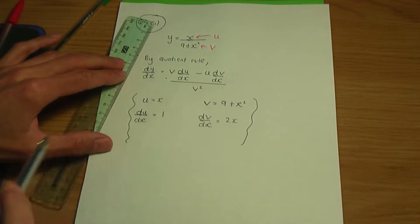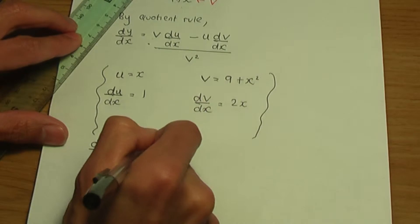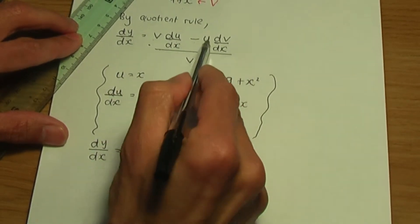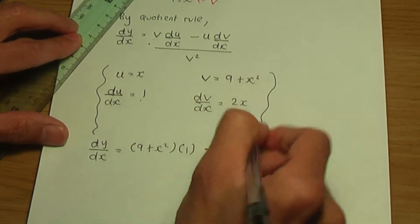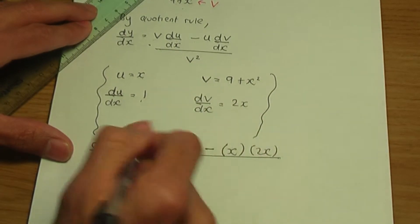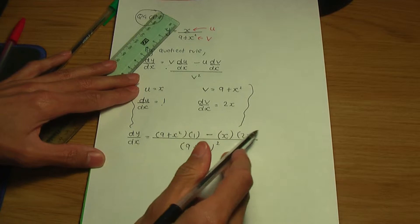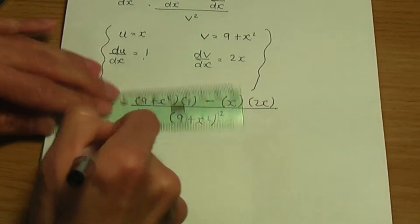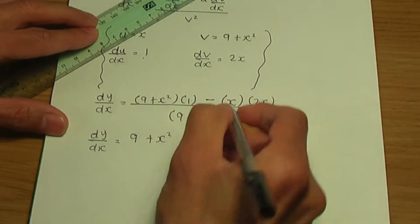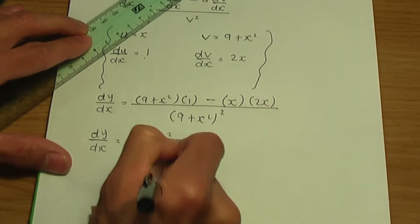Now let's substitute into the quotient rule. dy over dx equals v, which is 9 plus x squared, multiplied by du over dx which is 1, minus u which is x, multiplied by dv over dx which is 2x, all divided by v squared — that is 9 plus x squared, squared. Simplifying the numerator: 9 times 1 is 9, x squared times 1 is x squared, and minus x times 2x gives minus 2x squared, all over (9 plus x squared) squared.